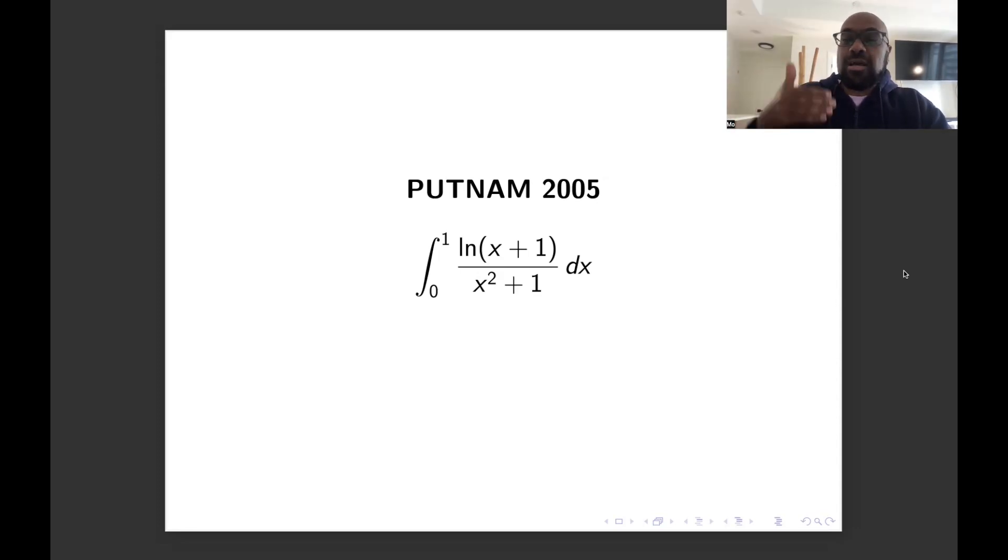So we're going to take marginal steps along the way to figure out how to compute the integral from 0 to 1 of ln(x + 1) all over x² + 1 dx. The key is going to be using a combination of trigonometric substitution and a symmetry argument. So let's go ahead and take a look.